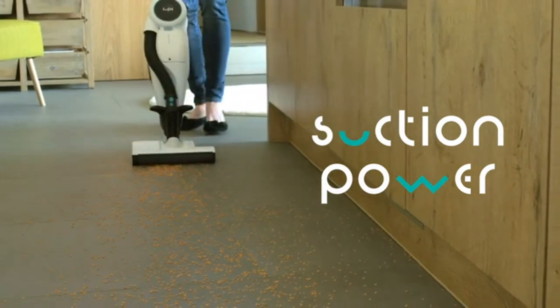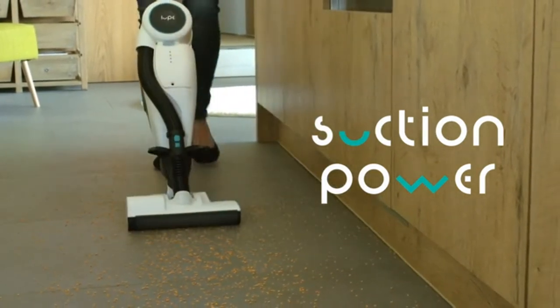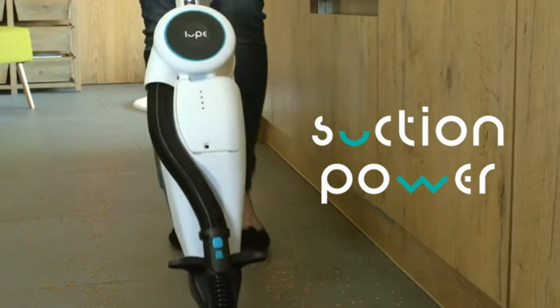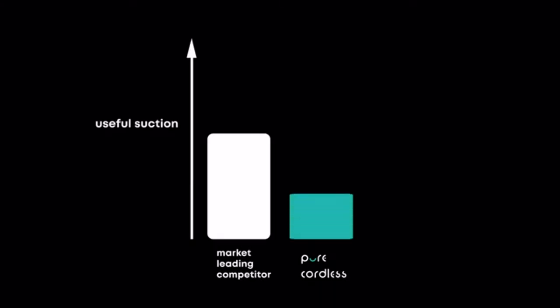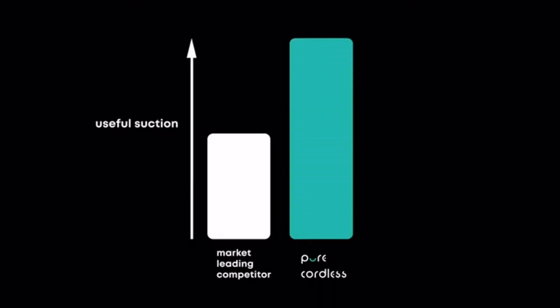Loop's brushless motor spins over 100,000 RPM, and our patented suction intensifier does the rest, developing almost twice as much useful suction than any other cordless.